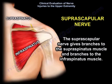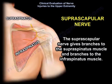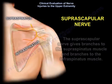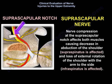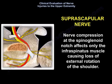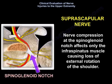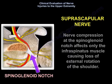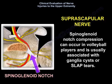The suprascapular nerve gives branches to the supraspinatus and infraspinatus muscles. Nerve compression at the suprascapular notch affects both muscles, causing decreased shoulder abduction and loss of external rotation with the arm at the side. Compression at the spinoglenoid notch affects only the infraspinatus, causing loss of external rotation. Spinoglenoid notch compression can occur in volleyball players and is usually associated with ganglion cysts or labral tears.